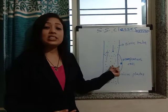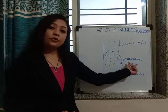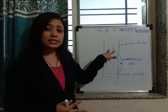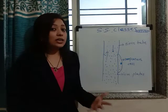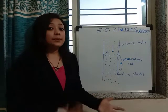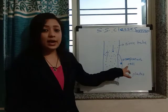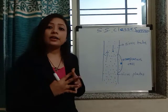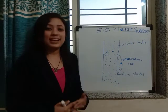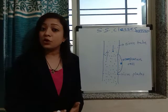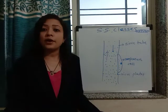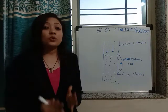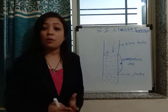Companion cells are connected to the sieve tubes and act as nursing cells. In sieve tubes, the nucleus and other organelles are absent, so the companion cells keep the sieve tubes alive by nourishing them. They also provide energy in the form of ATP for the conduction of food material. The food material transported through phloem is by active transport, which requires energy in the form of ATP.